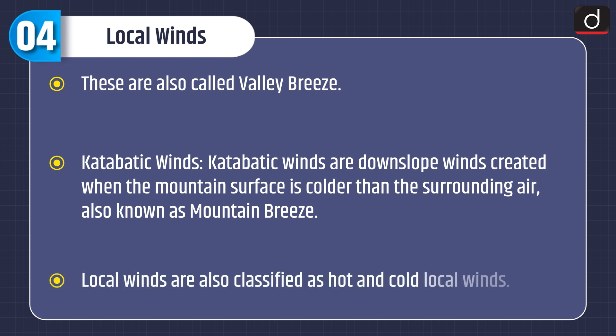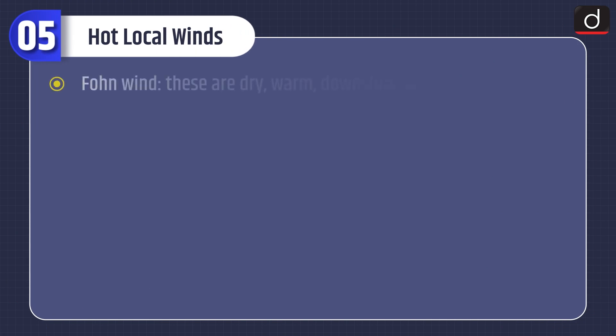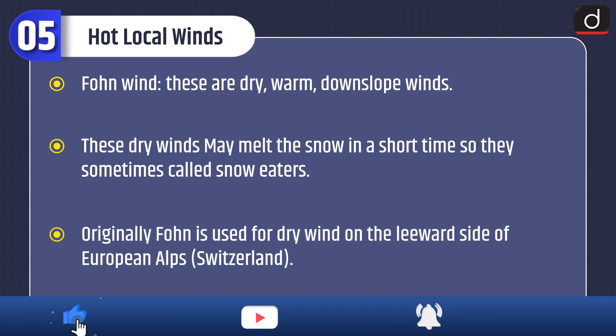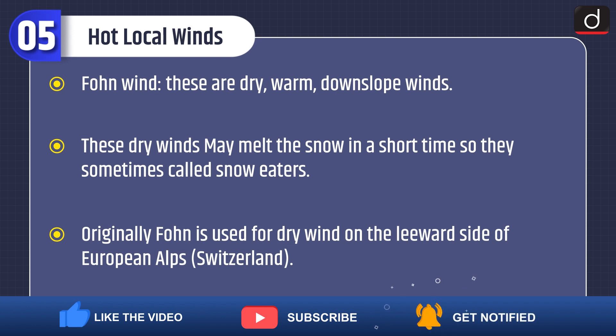Local winds are also classified as hot and cold local winds. Hot local winds: Föhn winds are dry, warm, downslope winds. These dry winds may melt the snow in a short time, so they are sometimes called snow eaters. Originally, Föhn is used for the dry wind on the leeward side of the European Alps in Switzerland.